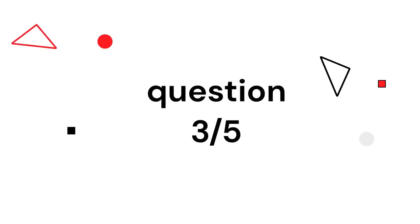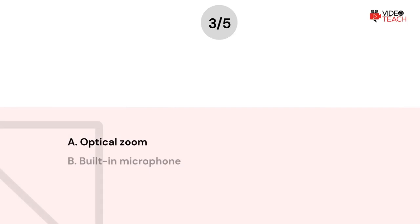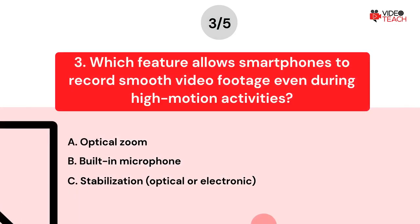Question number three. Which feature allows smartphones to record smooth video footage even during high motion activities? Option A: Optical zoom. Option B: Built-in microphone. Option C: Optical or electronic stabilization.